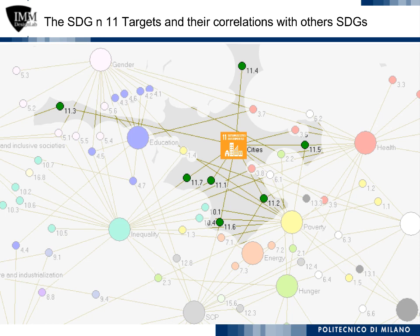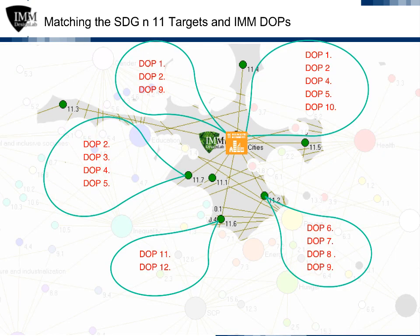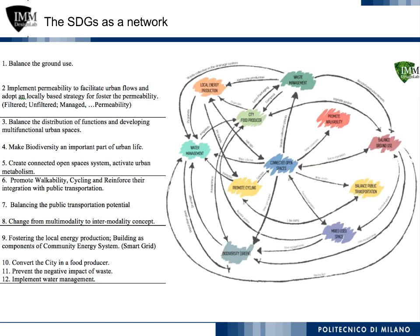As shown, DOPs are specifically aligned to number 11 of UN SDGs' 2030 targets. In this figure, you can see where the IMM design ordering principles overlap and are aligned to the UN Sustainable Development Goals.